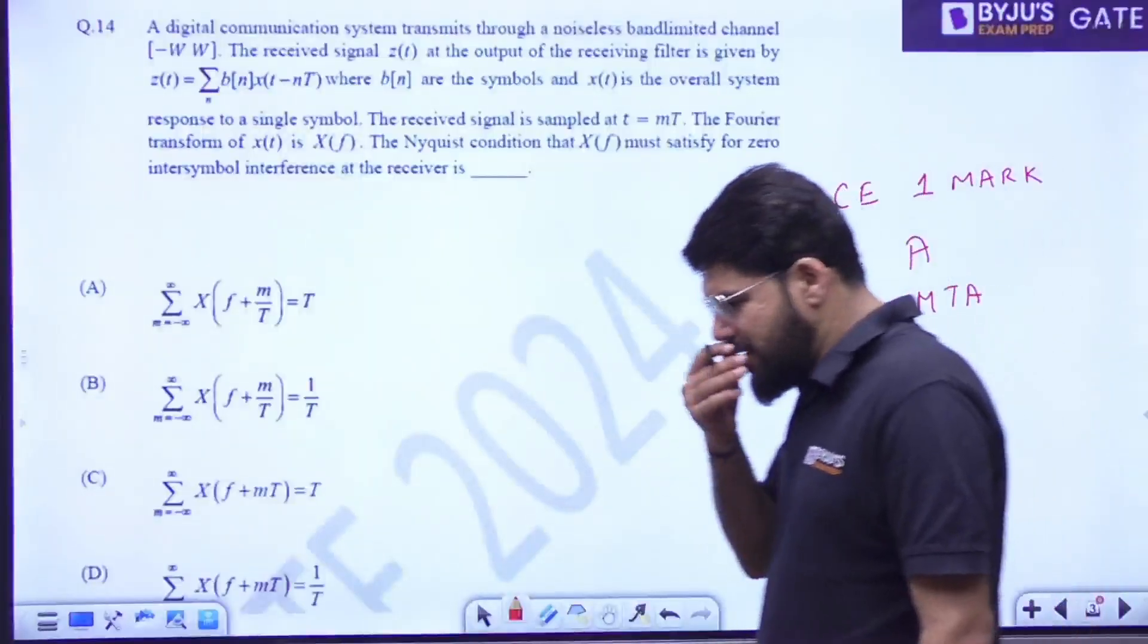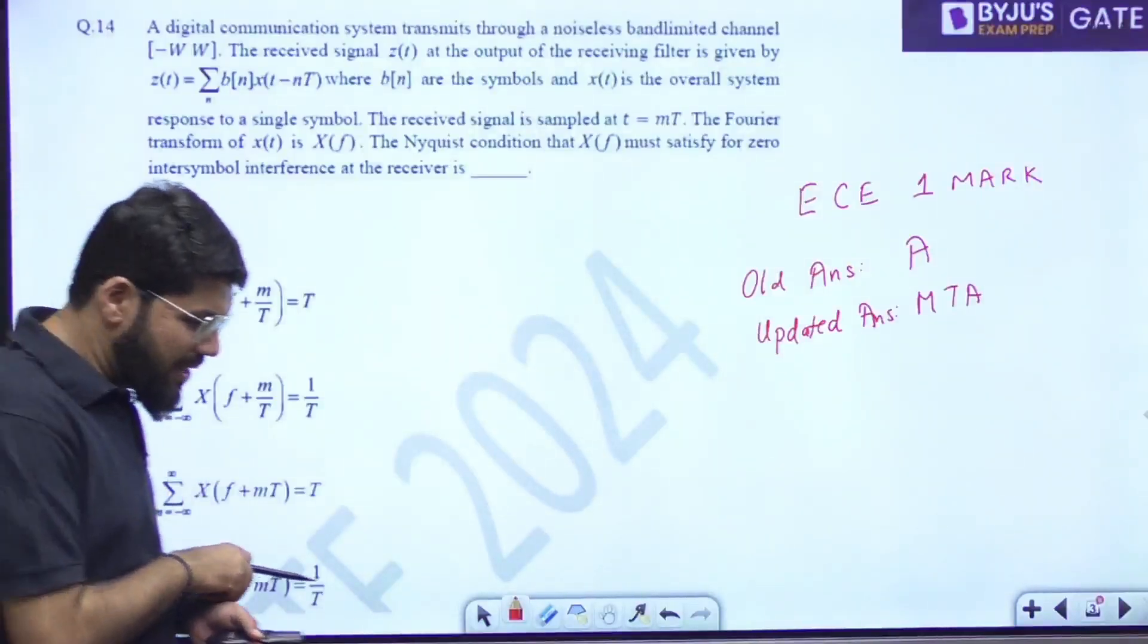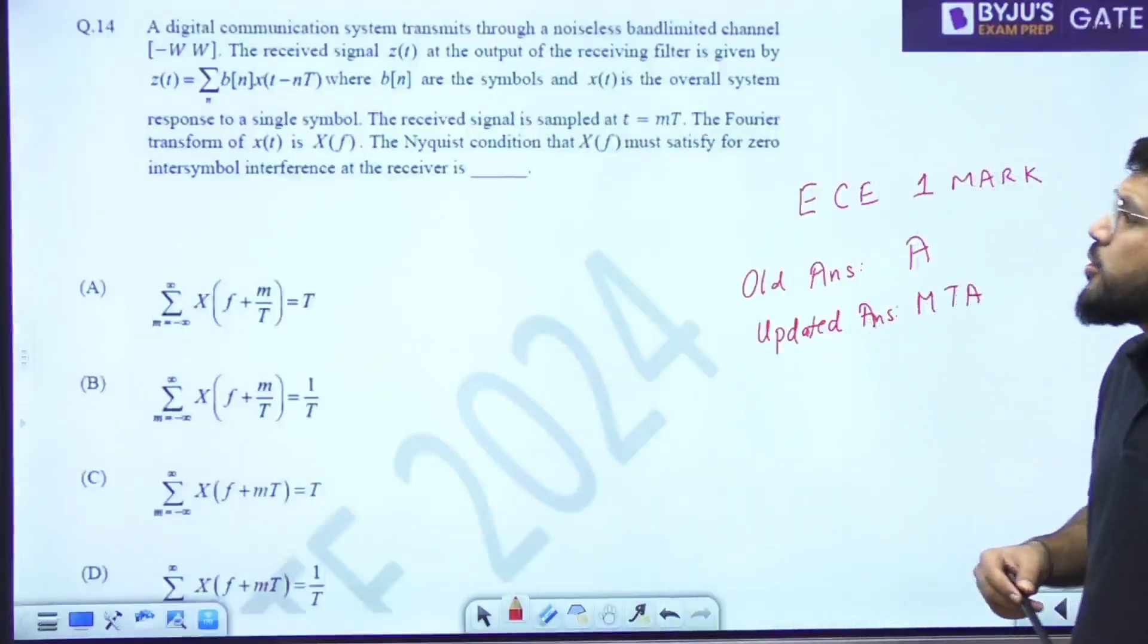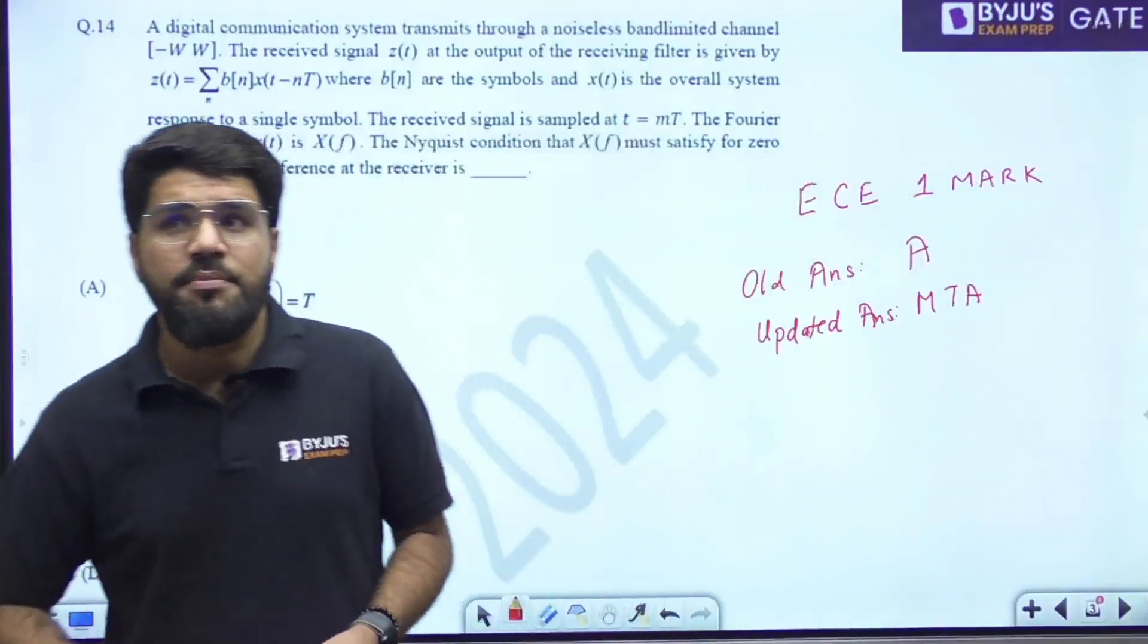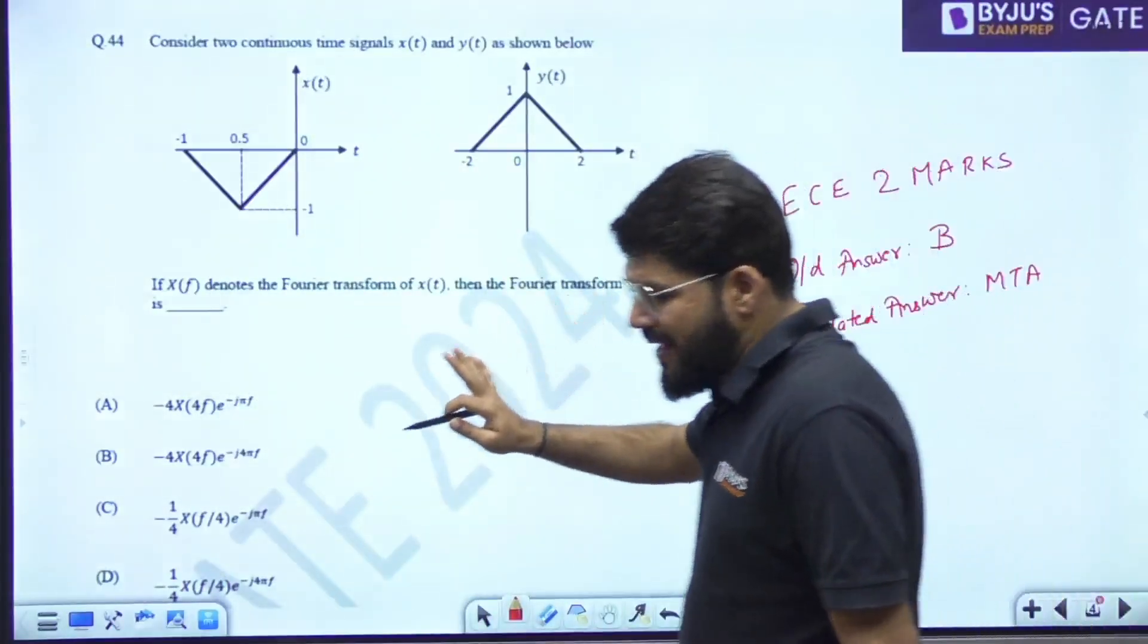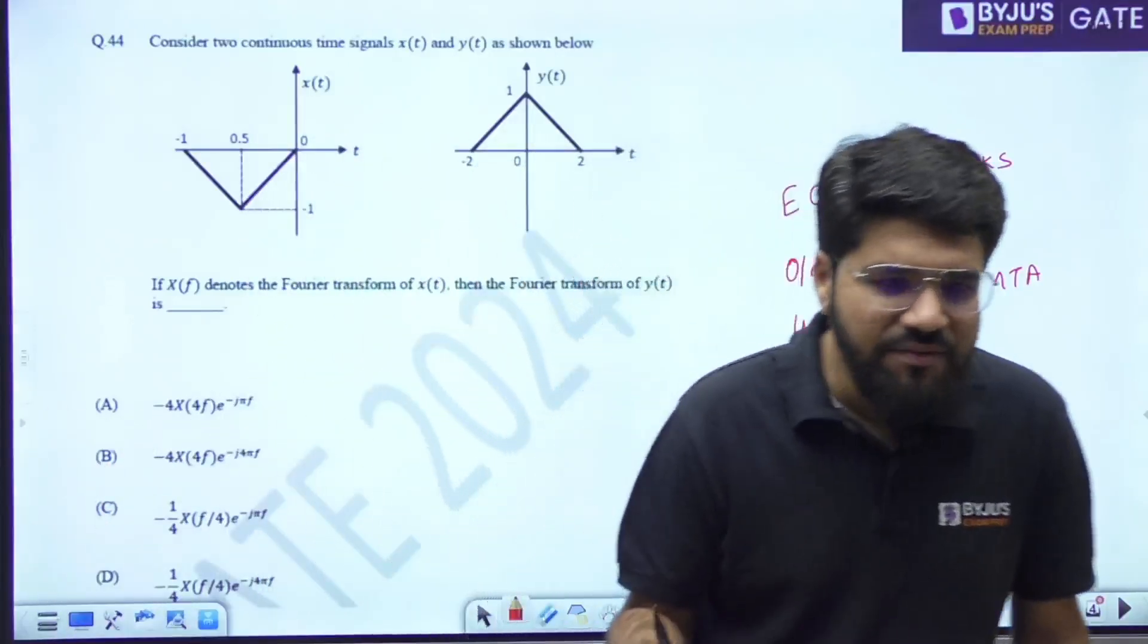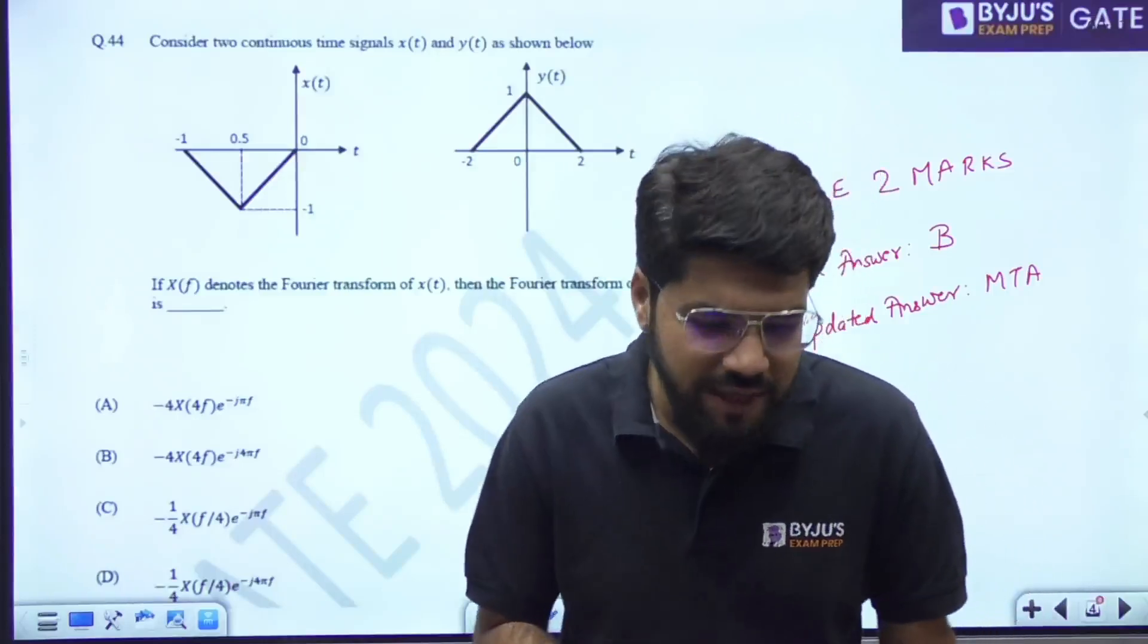This is really unexpected coming up for the students. I spoke to Saket sir also regarding this. Communication question number 14 in the EC, which is a one mark question, has been allotted marks to all. Coming to the next one, a very silly mistake here.